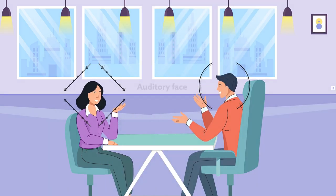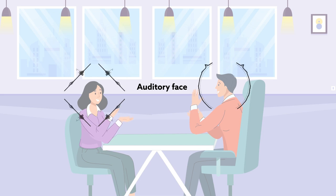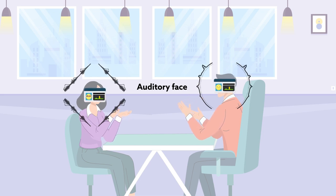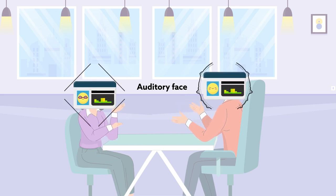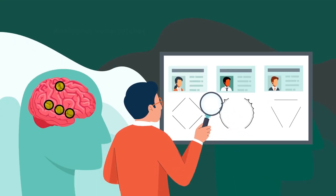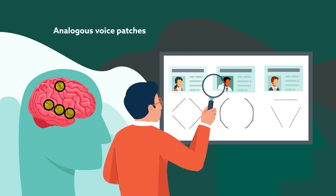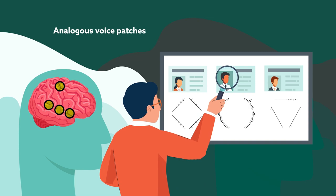The human voice is sometimes called an auditory face because, besides words, it contains tones and inflections that convey a speaker's identity and emotional state. Just as certain face patches in the brain help humans and other primates process faces, analogous voice patches might help humans process voices according to functional MRI studies.